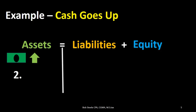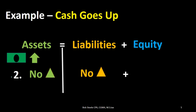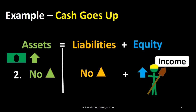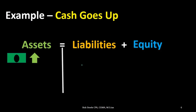A second scenario: cash went up — what else could have happened? Liabilities have no change. How about equity goes up? That would mean the left side equals the right side. When might that happen? Why would cash go up and equity go up? Well, maybe we earned revenue — revenue increasing the equity side. That means assets went up on one side of the equal sign and equity went up on the other side. Assets equal liabilities plus equity — still in balance.